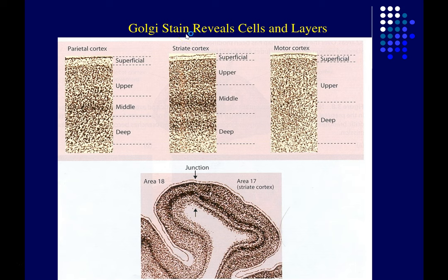The Golgi stain uses a silver impregnation method developed by Camillo Golgi and used to great effect by him and by Santiago Ramón y Cajal. Here you're seeing different sections of human cortex — a piece of parietal cortex — and this is a vertical slice going from the surface of the cortex down to the white matter-gray matter boundary. You can see stripes and banding patterns, and these banding patterns differ from one patch of cortex to the next.